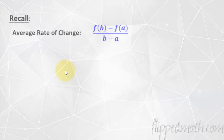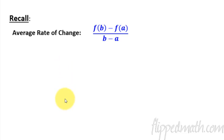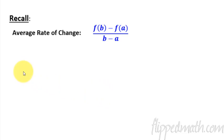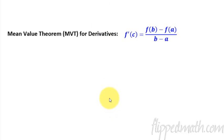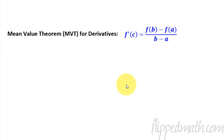We're going to begin by remembering what the average rate of change is. The average rate of change is just the slope between two points — that's the slope of the secant line from back in unit one or two. We also have the mean value theorem, where the instantaneous rate of change equals the average rate of change, meaning there's some input value c between a and b where instantaneous equals average.